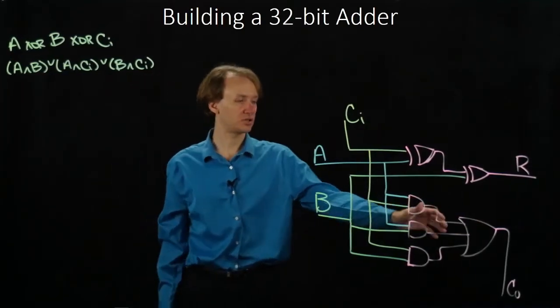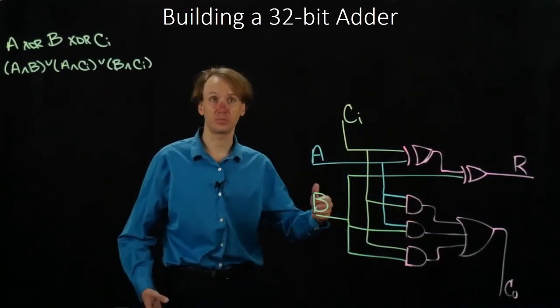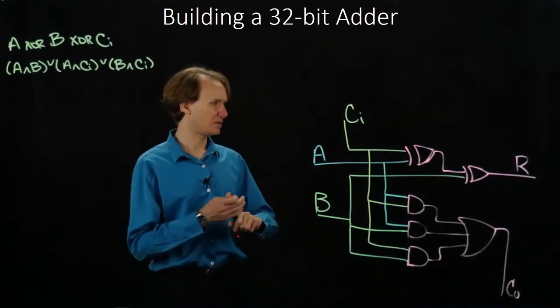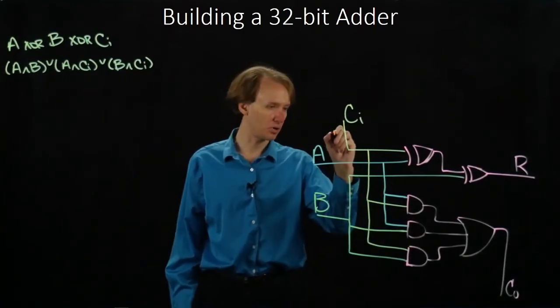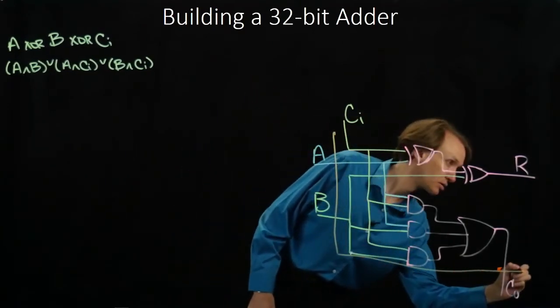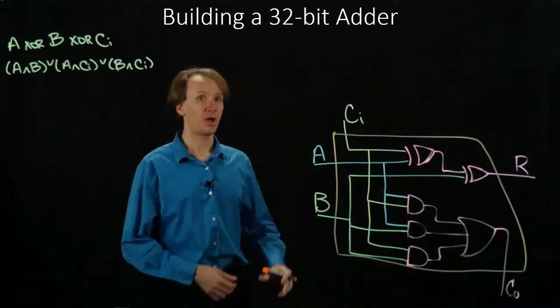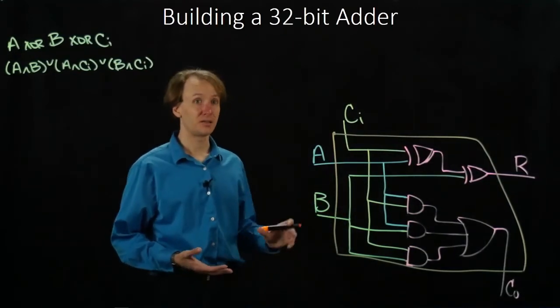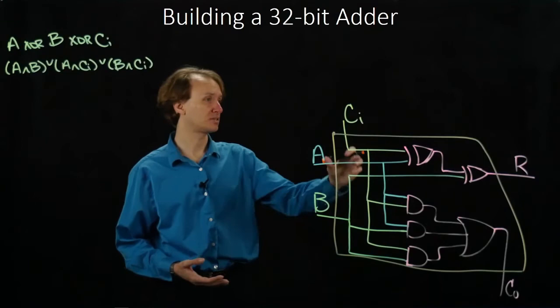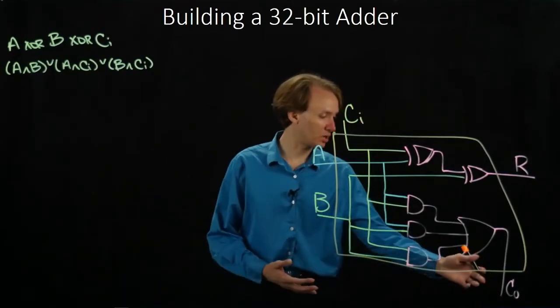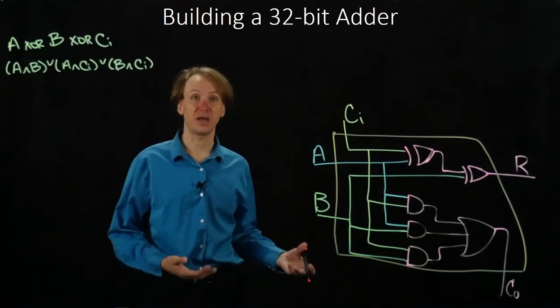So there we go. There's both parts of that. I have a result bit and the carry-out bit. Once we have the AND gates, all we needed to do was connect all of our inputs to those AND gates so that they could get to the outputs. And then if I draw a nice box around this, I've got a one-bit adder. And this one I can stack because I have a carry-in and a carry-out. So my carry-out of this one can connect to the carry-in of the next one.